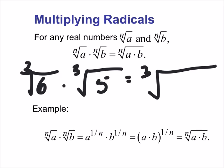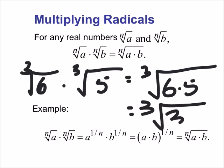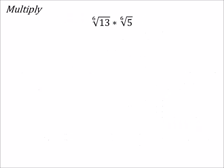And then multiply the six and the five, so in actuality we get the cube root of 30. All right, so here's an example: we got the sixth root of 13 times the sixth root of five.